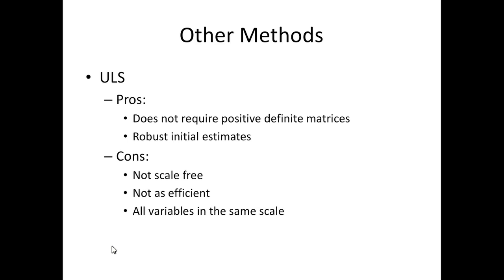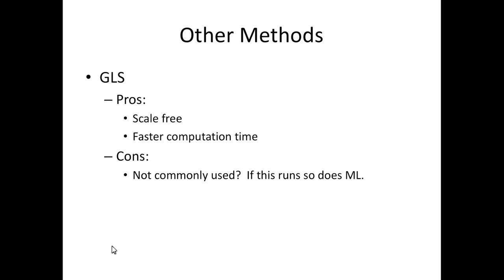Generalized least squares, the pros of that one is that it is scale-free, so you can transform the solution, and it is faster computing-wise. Generally, this is personal experience with cons here, it's not commonly used I don't feel, because if it runs, usually so does maximum likelihood. And maximum likelihood is most definitely by far the most popular version.